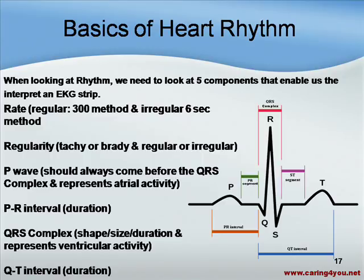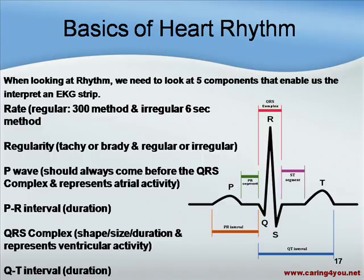The regularity: we want to look at whether it's tachycardia, bradycardia, or whether the rhythm is regular or irregular. The P wave should always come before the QRS complex and represents atrial activity. We want to look at the PR interval and its duration. We want to look at the QRS complex — its shape, size, and duration — which represents ventricular activity. We also want to look at the QT interval and its duration.